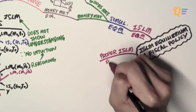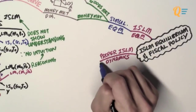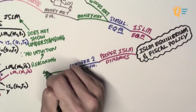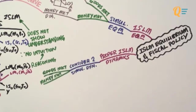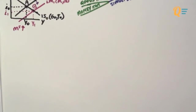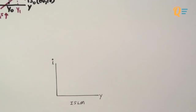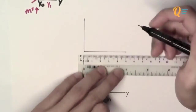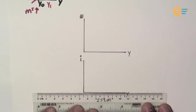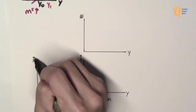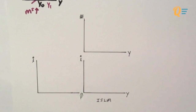So what I'm going to go through now is the proper IS-LM dynamics. In order to have a proper analysis, you have to consider two simultaneous dynamics at the same time — in the goods market as well as your money market. I'm going to illustrate this with the IS-LM space in the centre, with the Keynesian cross diagram drawn above it and the money market diagram drawn on the left side of the IS-LM model.